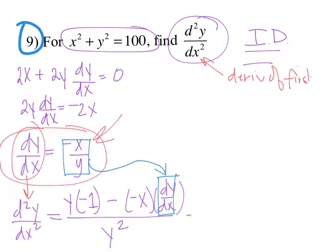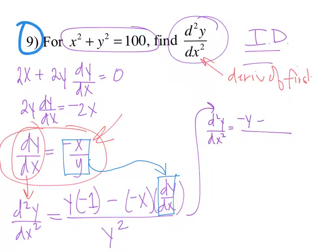Let's do that. The second derivative of y with respect to x is equal to negative y minus negative x squared over y. This becomes a plus because it's minus negative, so negative y plus x squared over y. That came about by plugging in negative x/y right in here and multiplying x times x. All over y squared.